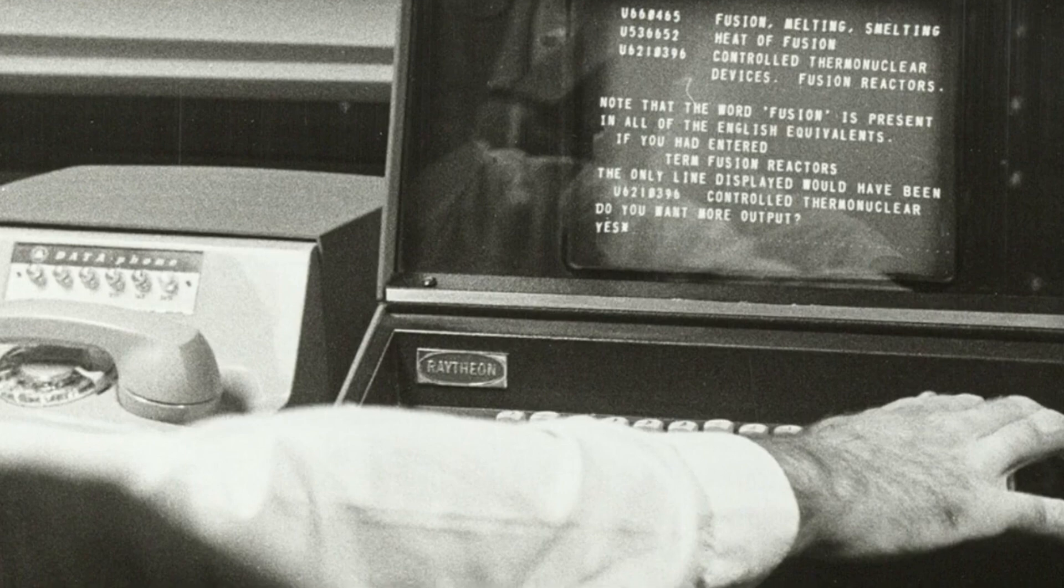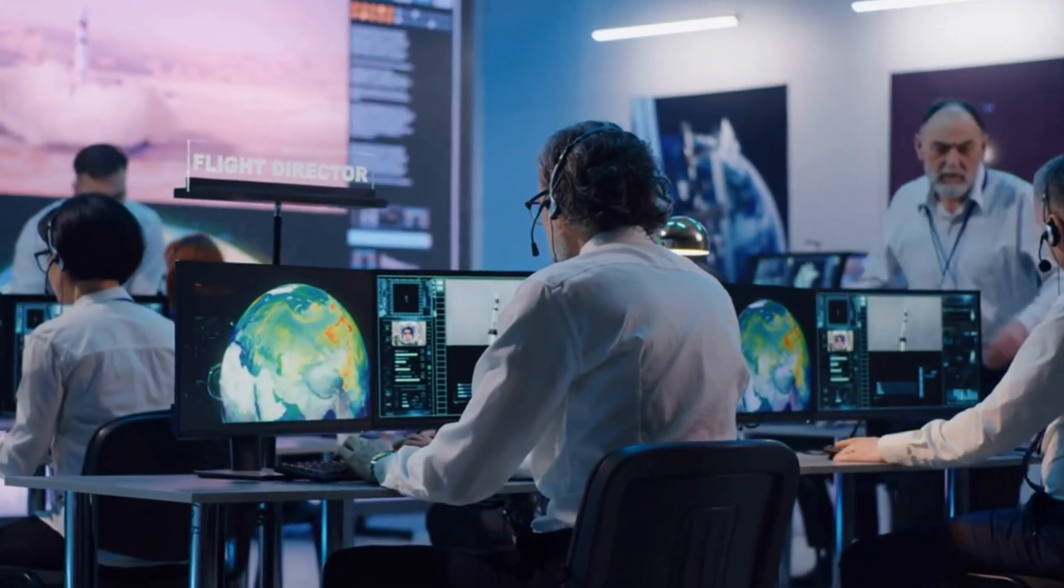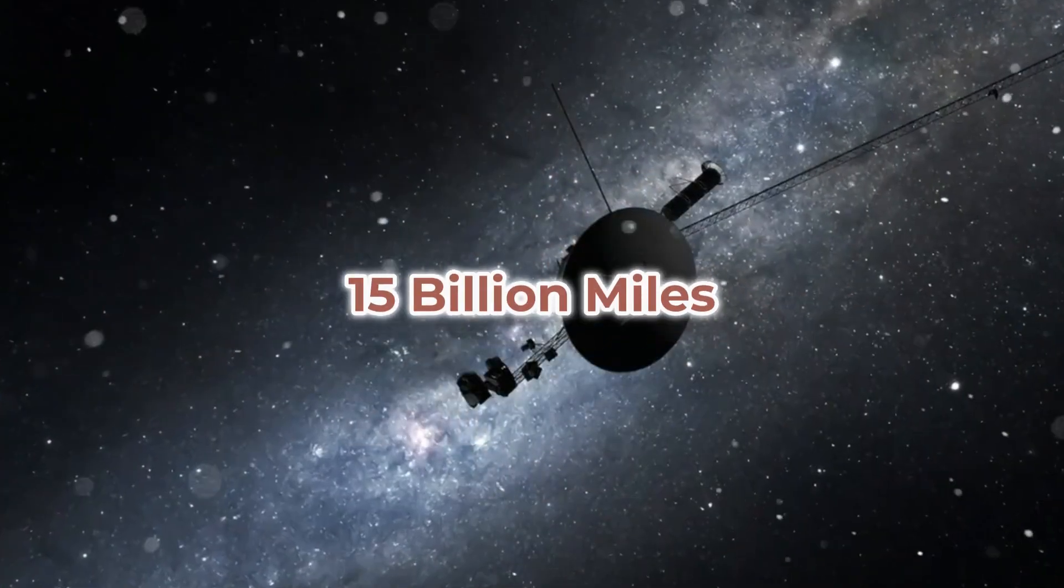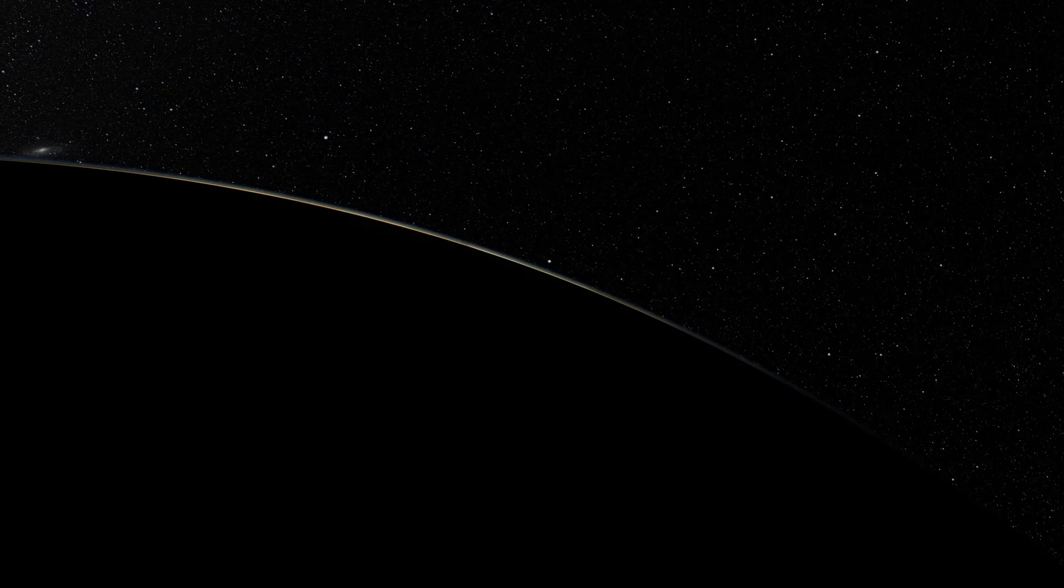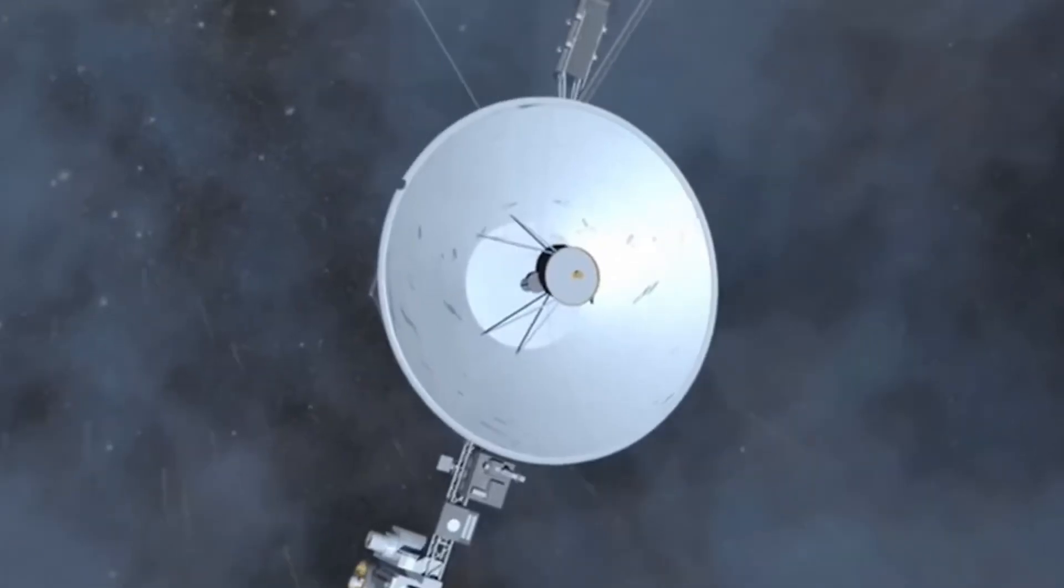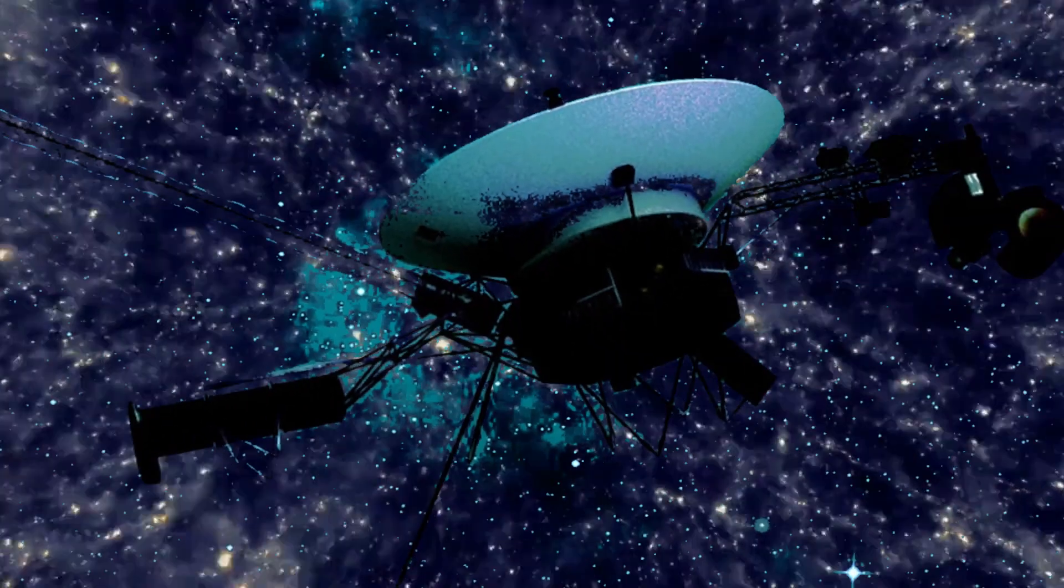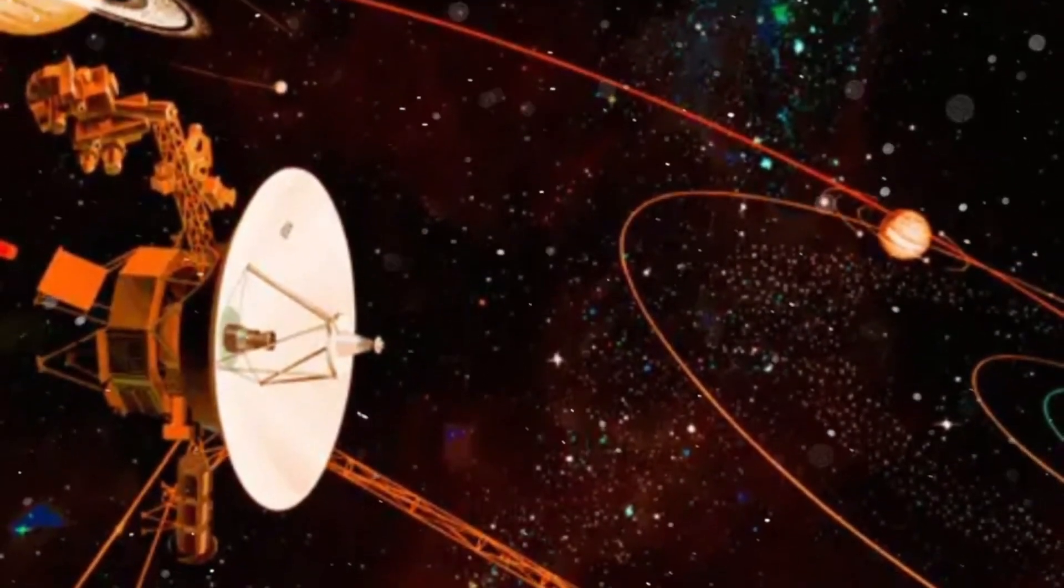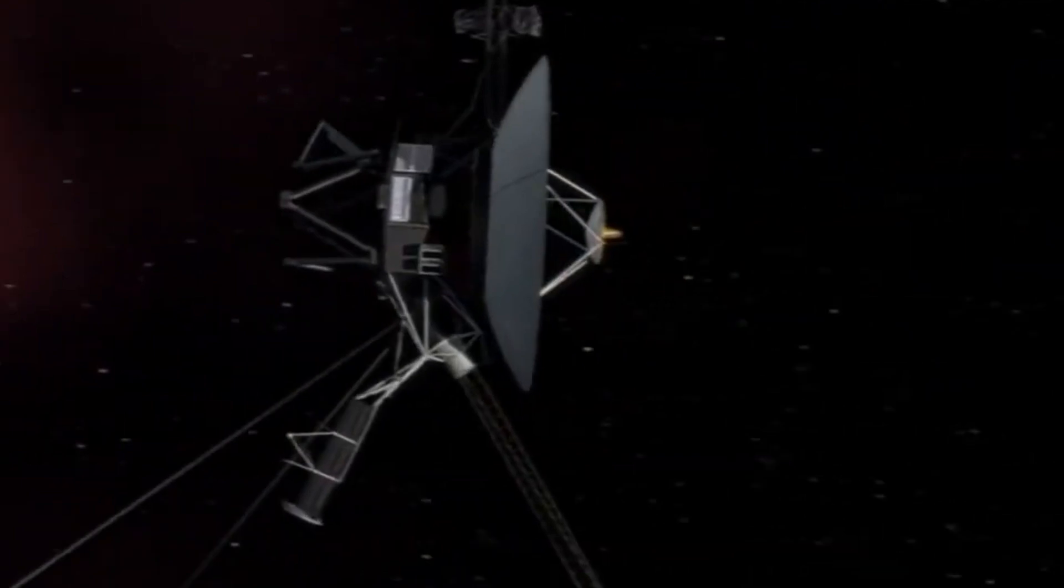Imagine yourself in the control room of NASA's Voyager mission. Screens flicker with data from a spacecraft launched in 1977, now over 15 billion miles away from Earth. This is Voyager 1, humanity's farthest reaching emissary into the cosmos, still sending back valuable insights from the edges of our solar system.